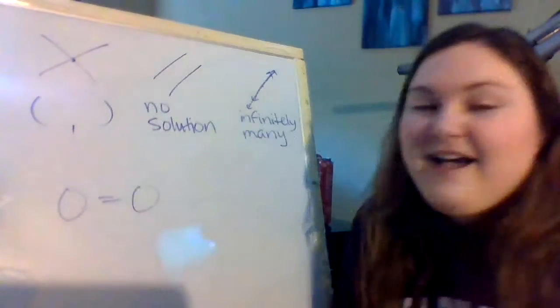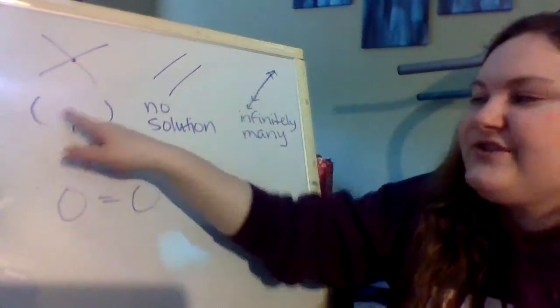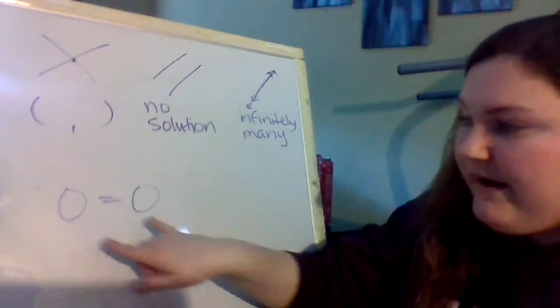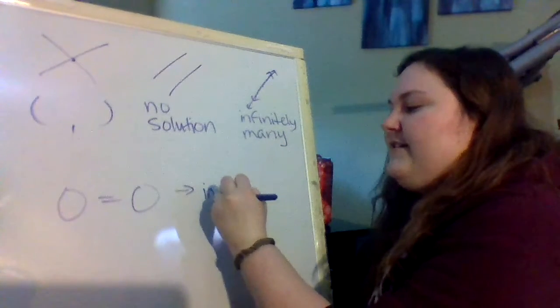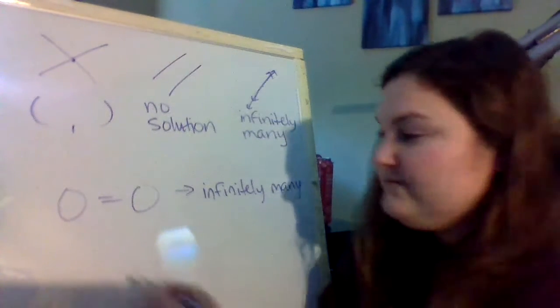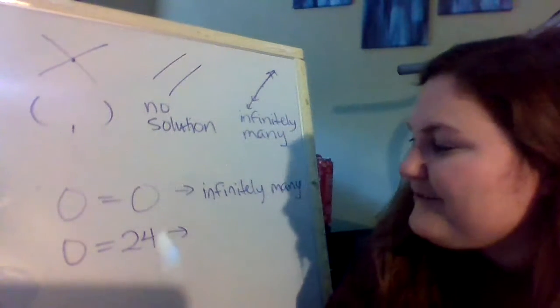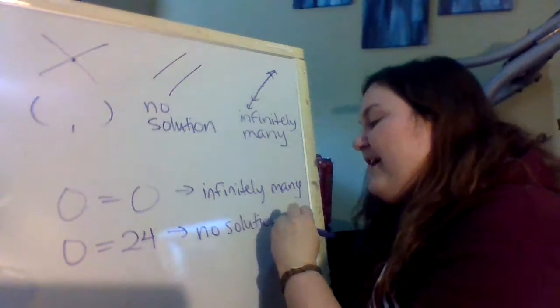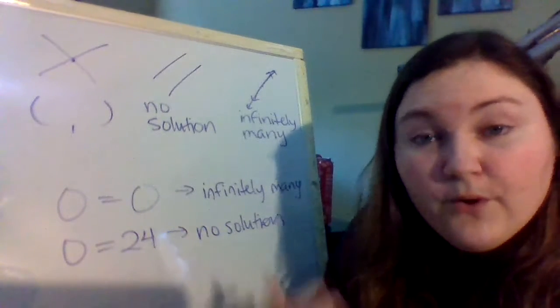So going back to what we had, we have zero equals zero once you went and eliminated to solve that system. Zero equals zero means there's not going to be a single solution point we can write. Instead it's going to mean one of these other things. What we do is look at what we are left with. If it's something that's true, these two numbers equal each other, that would mean that our answer is infinitely many solution points. If we're left with something that's not true, like zero equals 24. Zero never equals 24 and no world would zero equal 24. So that means there is no solution because there's no point that could make zero equal 24.